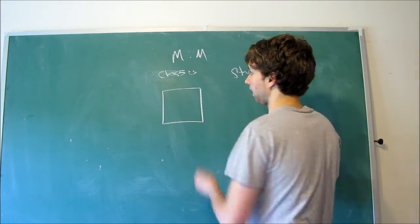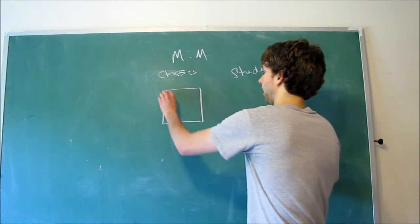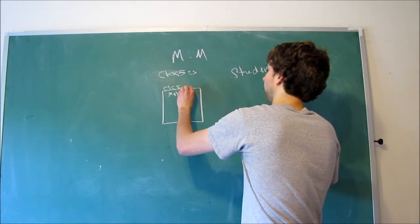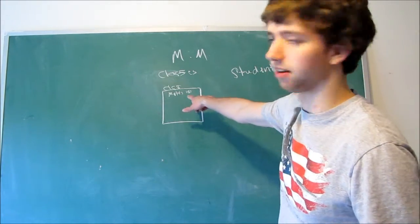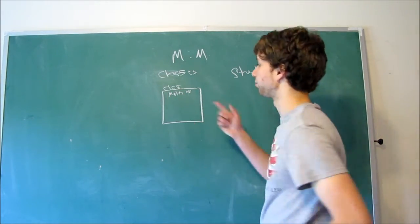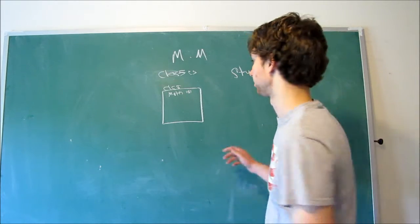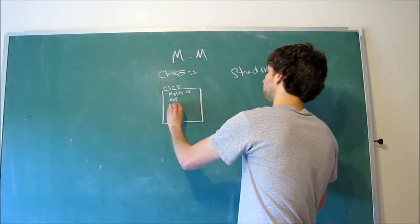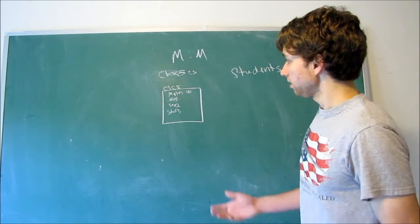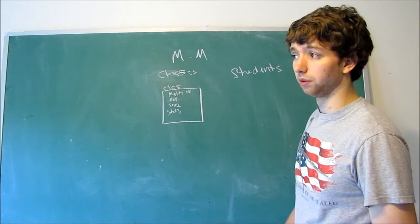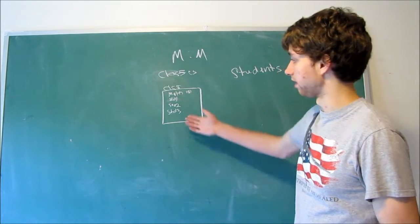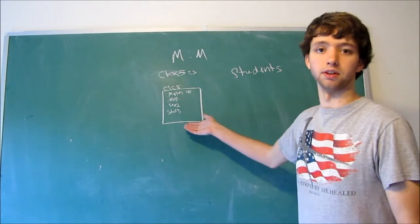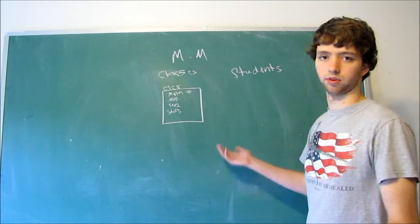Here we have classes table, and we have a specific class such as math. Math 101, whatever. So we have math 101, and then we list all of the people within this class. Student number one, student number two, and student number three. Well, we can try that, except what if a student drops out? Well, then we have a null value, which we don't want to have if possible. And what if we need four students? That's not going to work because we only have three columns.